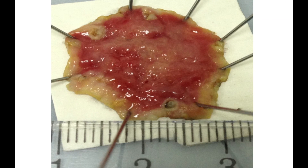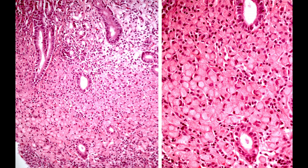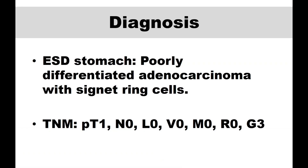This is the ESD specimen. You see an uneven surface at microscopy, and here you can see that the glands and pits are displaced by uniform-looking small round cells with an eosinophilic content. At higher magnification, those cells look very uniformly and are the classic form of signet ring cells. The diagnosis is ESD from the stomach with a poorly differentiated adenocarcinoma with signet ring cells, PT1N0L0V0M0R0 G3.